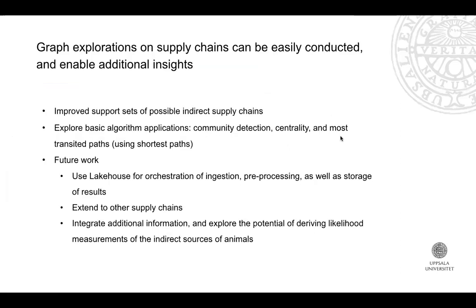Conclusions from the graph exploration: we have an improved support set of possible indirect supply chains, constrained not only by how many animals farms are sending each other, but also by sex, age range, and transport date. We explored some basic algorithmic applications — community detection, centrality, and most transited paths.